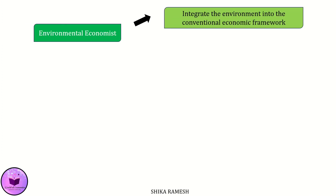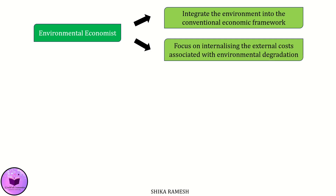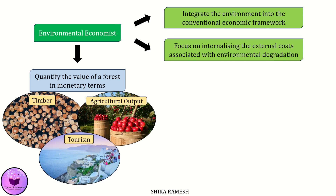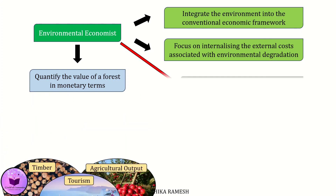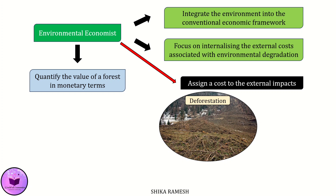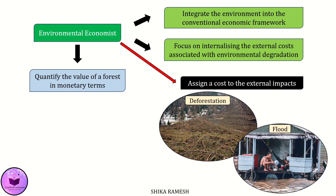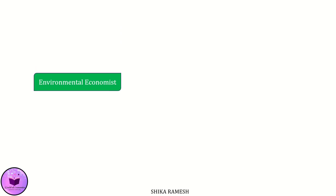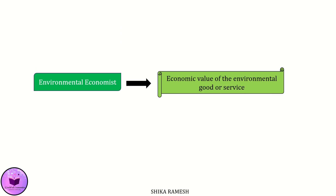An environmental economist seeks to integrate the environment into the conventional economic framework and will focus on internalizing the external costs associated with environmental degradation. An environmental economist would quantify the value of a forest in monetary terms like the revenue from timber, potential agricultural output from the cleared land, and tourism revenue. They would also try to assign a cost to external impacts arising from deforestation, like biodiversity loss, increased carbon emissions, local climate change and water cycle disruptions. For instance, if deforestation causes a flood due to reduced water absorption capacity of the soil and soil erosion, the cost of that flood would be attributed to deforestation. An environmental economist may also suggest imposing taxes on logging to reduce deforestation. In short, environmental economists focus on the economic value of the environmental good or service — if people are willing to pay for it, then it has an economic value.